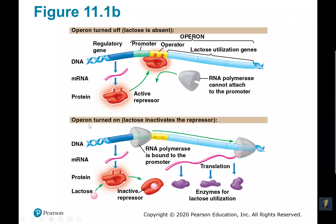Conversely, when lactose is present, the repressor proteins are still made, but lactose binds to the repressor and inactivates it — turning off the regulatory protein. This frees up RNA polymerase to bind onto the promoter region of the operon, giving us transcription and ultimately translation to make enzymes that allow the organism to use the lactose molecule for energy. Typically that's what we use carbs for — energy.